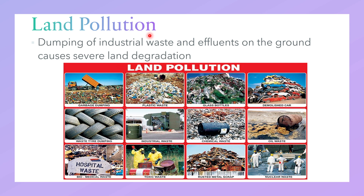Land pollution is also being caused tremendously and is a major pollution type caused by industries. As you can see, dumping of industrial waste and effluence on the ground causes severe land degradation. These should be treated properly to avoid any adverse effects on land, because when land gets polluted it becomes unfit for any other activity. It is very important to avoid the adverse effects which occur due to the dumping of industrial waste, plastic waste, chemical waste, and oil waste, which is a very common feature around most industries.